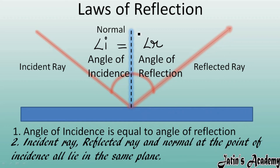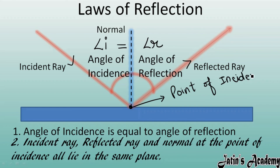The second law of reflection states that the incident ray, the reflected ray, and the normal at the point of incidence all lie on the same plane. The point where the incident ray, reflected ray, and normal all meet is known as the point of incidence. All three lie on one plane only.